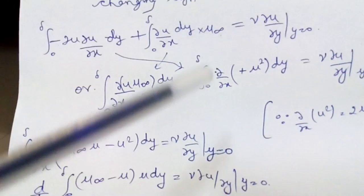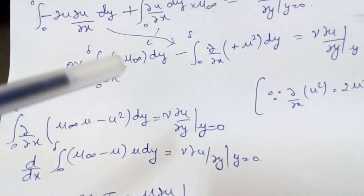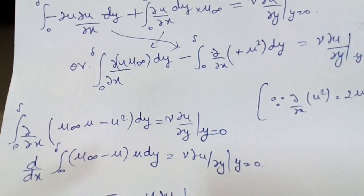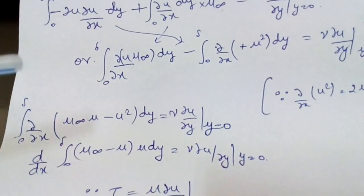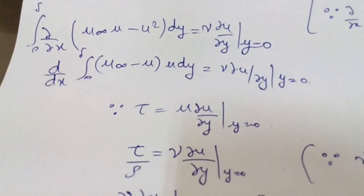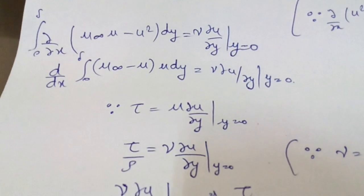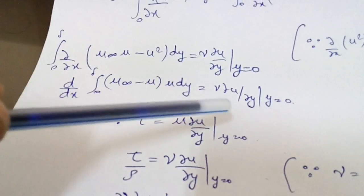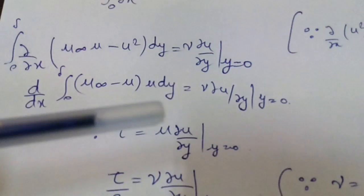Taking del by del x outside the integral (converting partial to total differential), the expression becomes: d by dx of integral from 0 to delta of (u∞·u minus u²) dy equals nu del u by del y at y equal to 0. Del by del x of u∞·u is valid since u∞ is constant and can be taken inside del by del x.